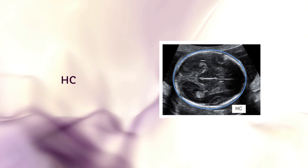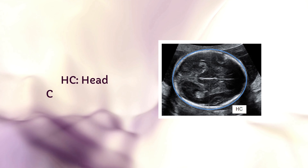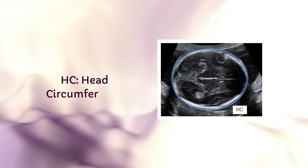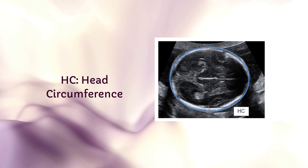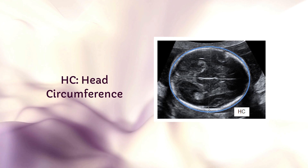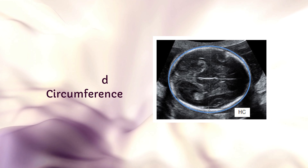HC is head circumference. It's another head measurement, but it measures around the head. Like BPD, it helps in estimating fetal weight and growth.